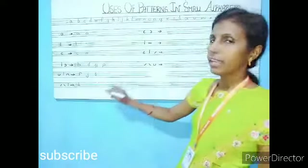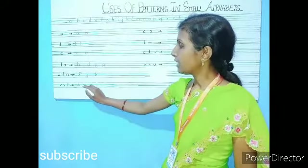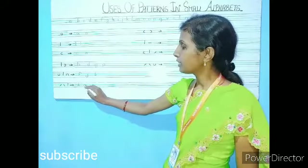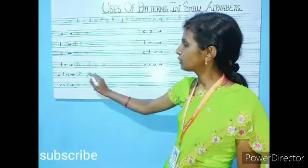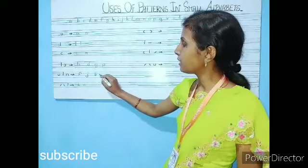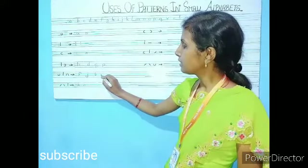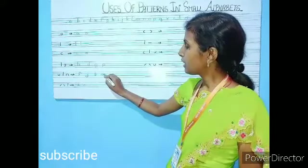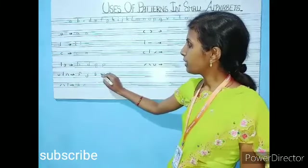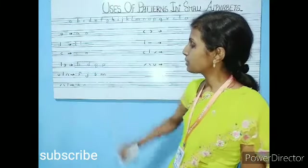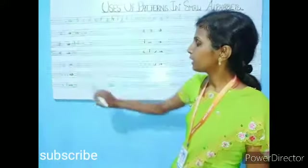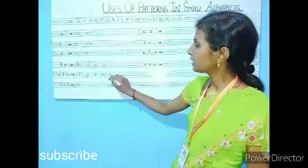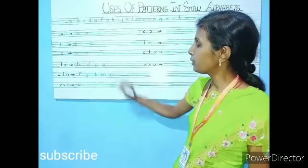We can also do M and N. For small M, give a standing line, a small opposite U, another opposite U, and a standing line — it becomes small M. For small N, draw a standing line and give a positive U — it becomes small N.